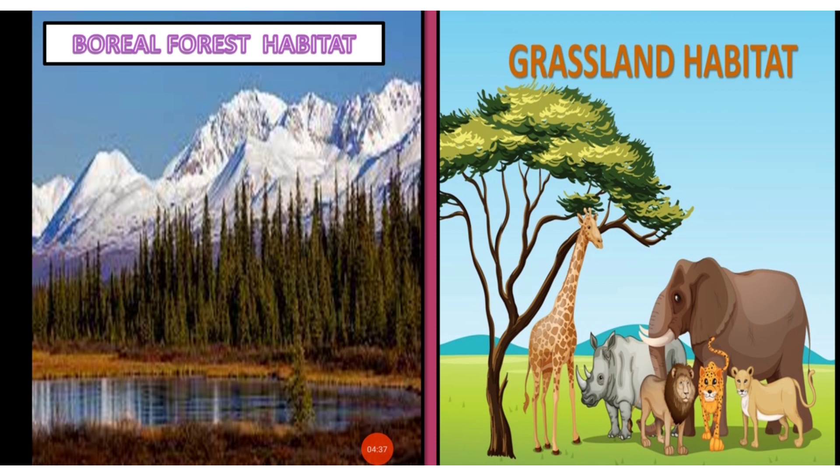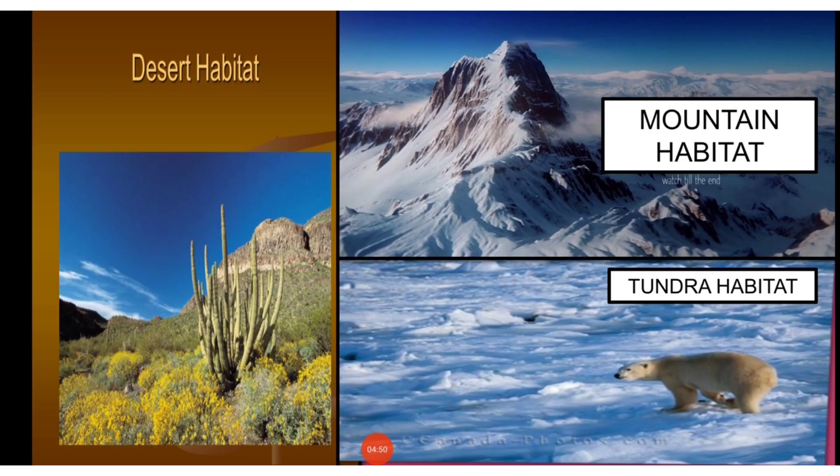The next one is grassland habitat. Grasslands are hot, dry areas where grasses are mainly present. It is the home of herbivores and carnivores animals.